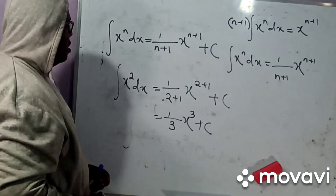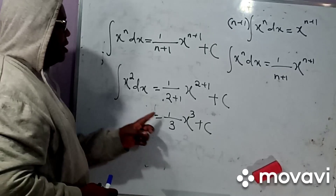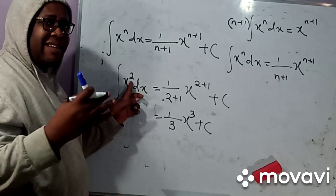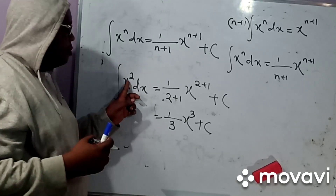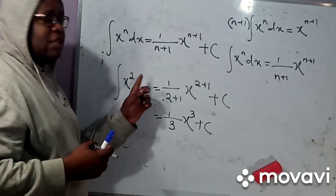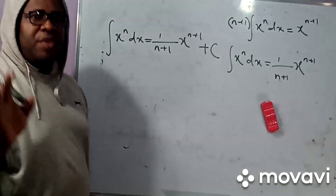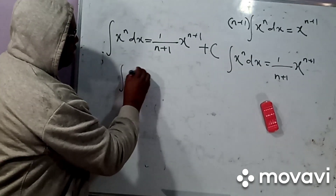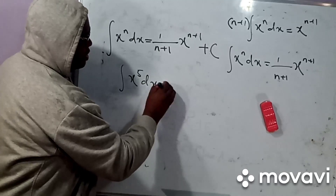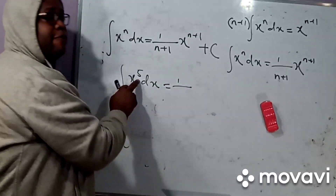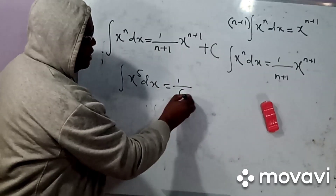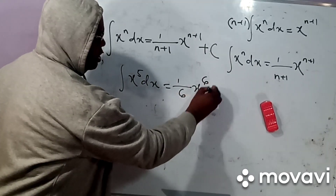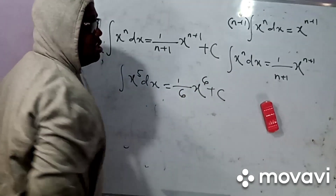So what this simply means is that whenever I integrate, I take the reciprocal of the power increased by 1 — that gives me 1 over 3 — then X to the power 3. Now, what if I were to integrate X to the power of 5 dx? It simply becomes 1 over 5 plus 1, which is 6, and then X to the power 6, plus a constant of integration.